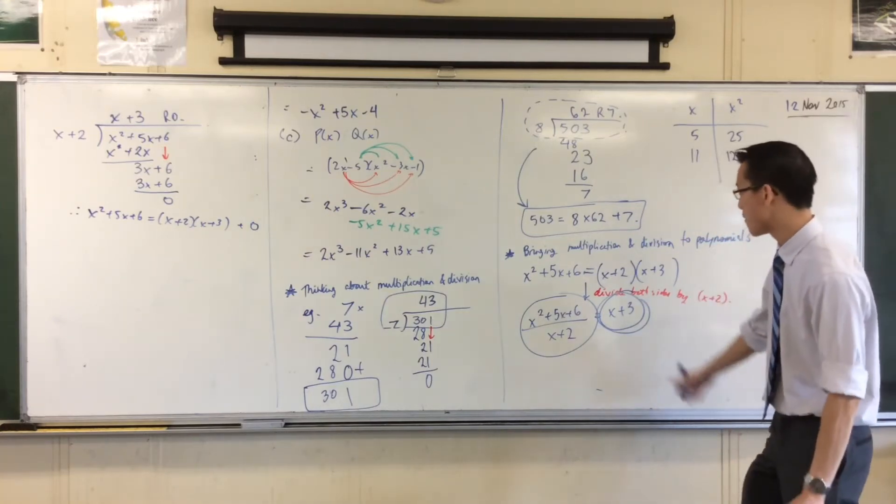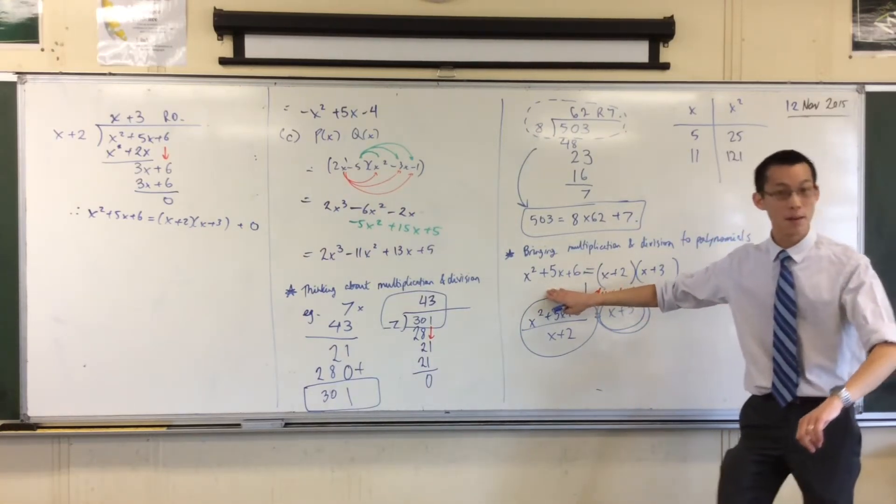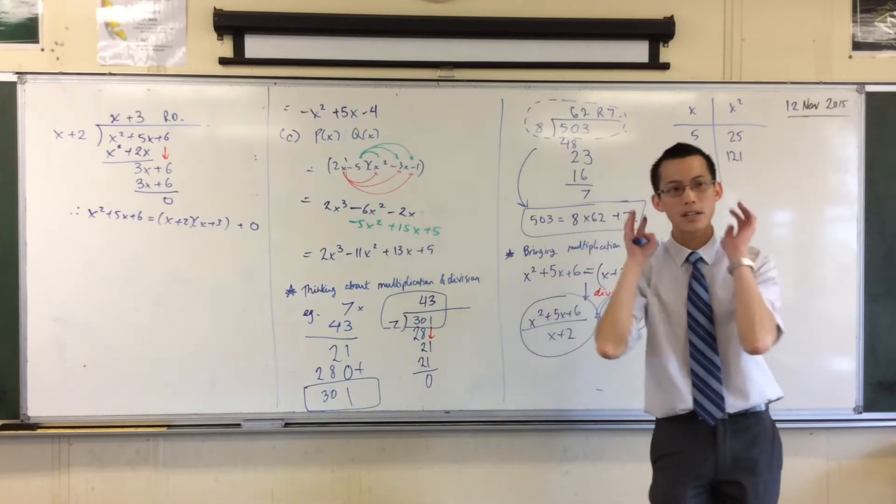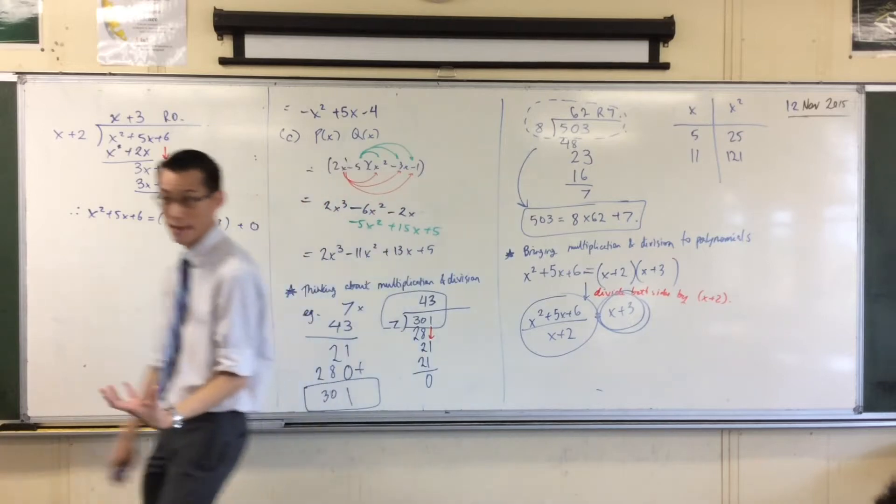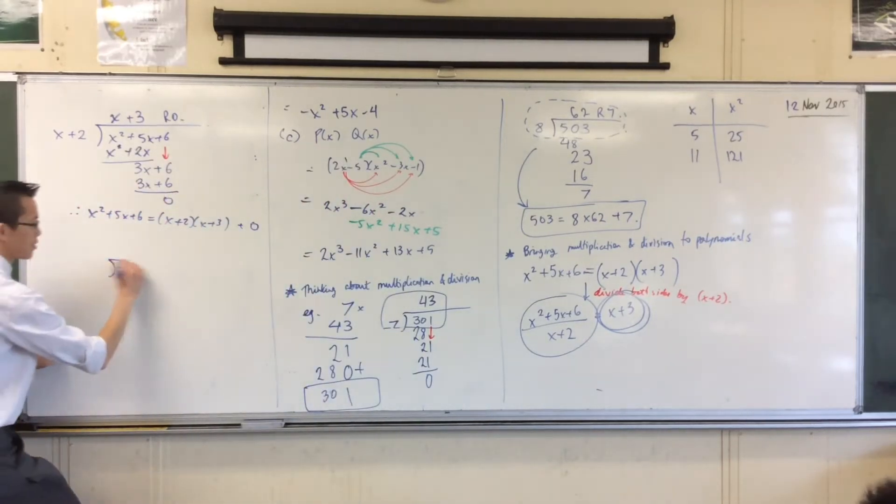Okay, here's what we're going to do. We'll take my same favorite quadratic, x squared plus 5x plus 6, right? But this time I'm going to divide by something that doesn't work, that is going to give me a remainder. Let's try this process again.